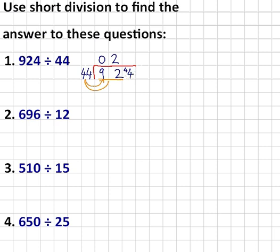So that has created a little 44 there. And now I'm going to ask myself, does 44 go into this 44? Yes, of course it does. It goes in once. So I'll put a 1 up there. And there is my answer, 21. 924 divided by 44 is 21.